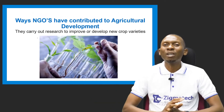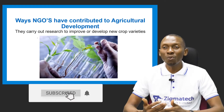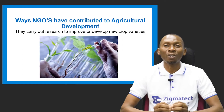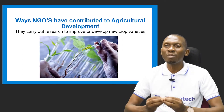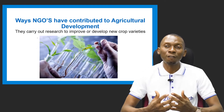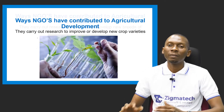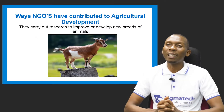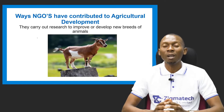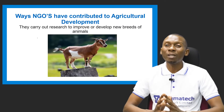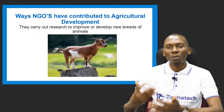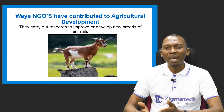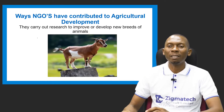They also help to carry out research to develop new crop varieties, which is very essential for agricultural development to meet the global demand for food. They also carry out research to improve or develop new breeds of animals — it's not just about crop improvement. They also get involved in animal improvement to ensure we have better animal by-products like milk, eggs, meat, and hides and skin.